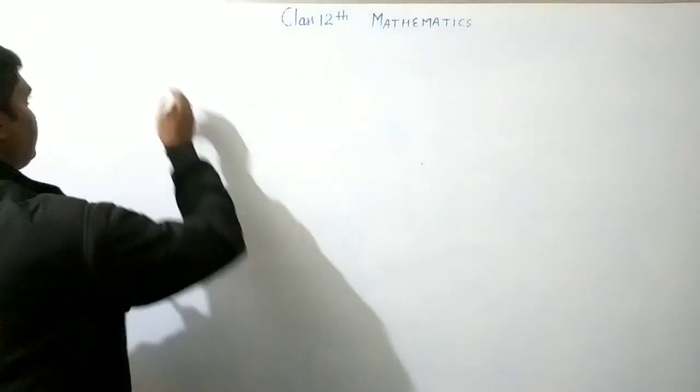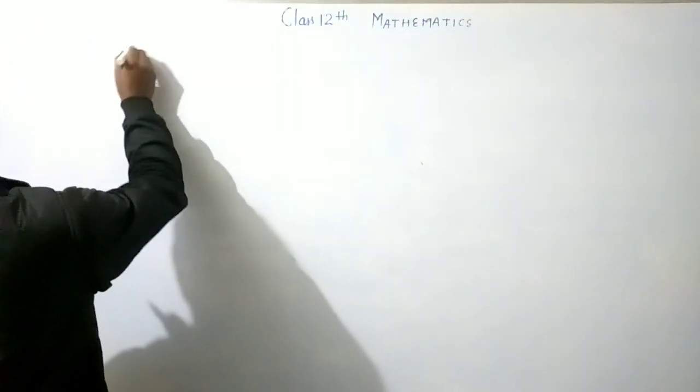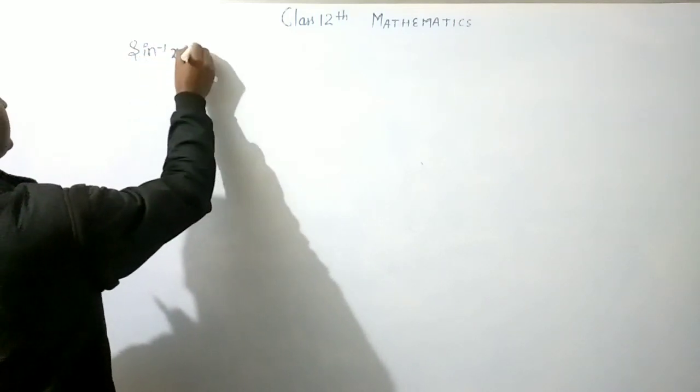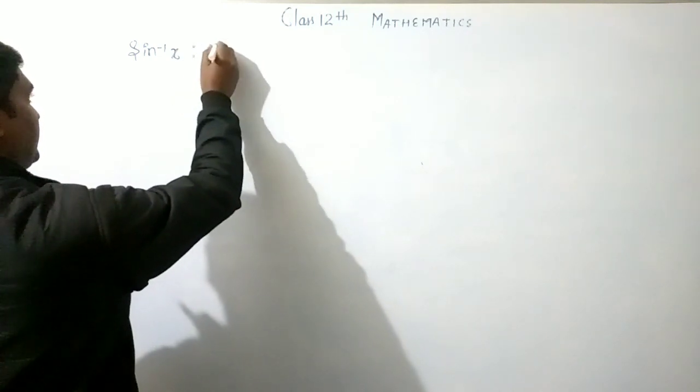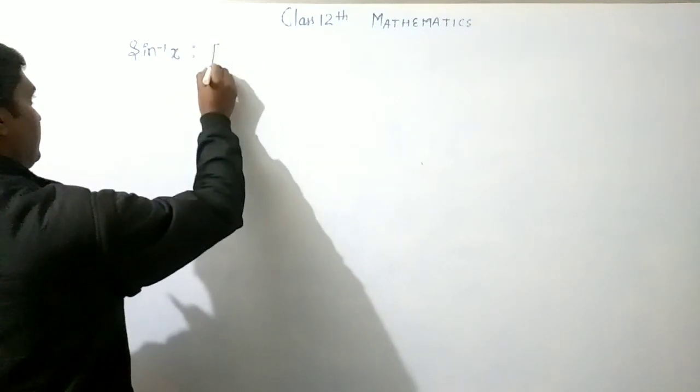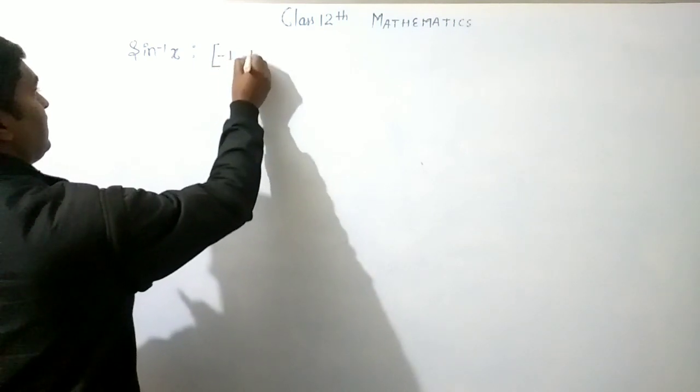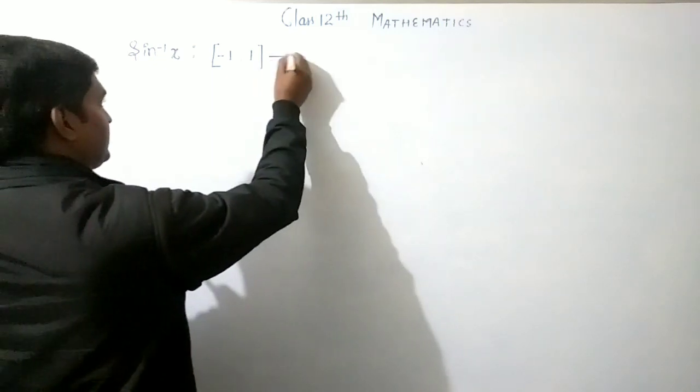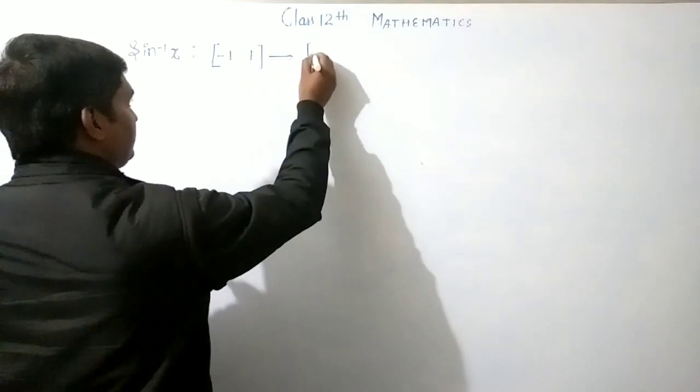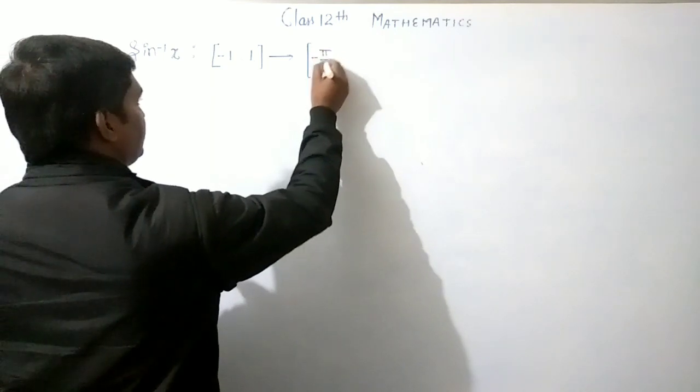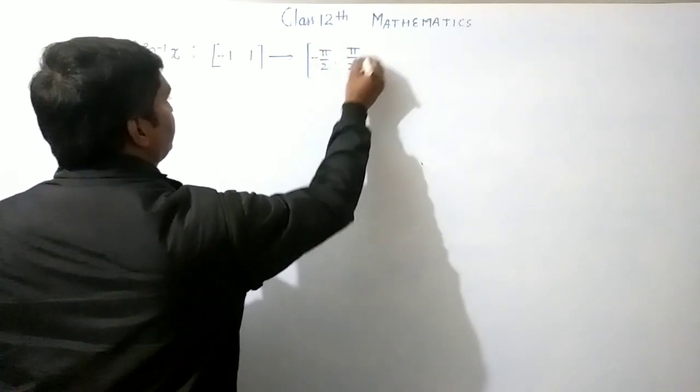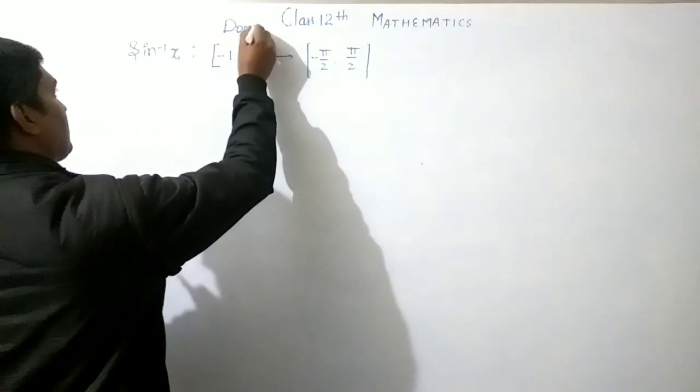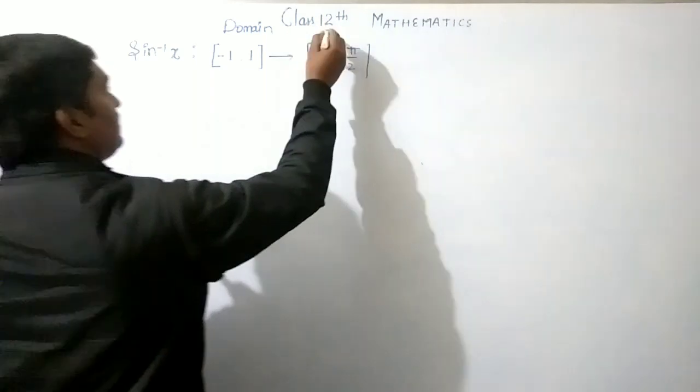First, sin inverse x. The domain is the closed interval [-1, 1]. The range is the closed interval [-π/2, π/2]. This is the domain and this is the range.